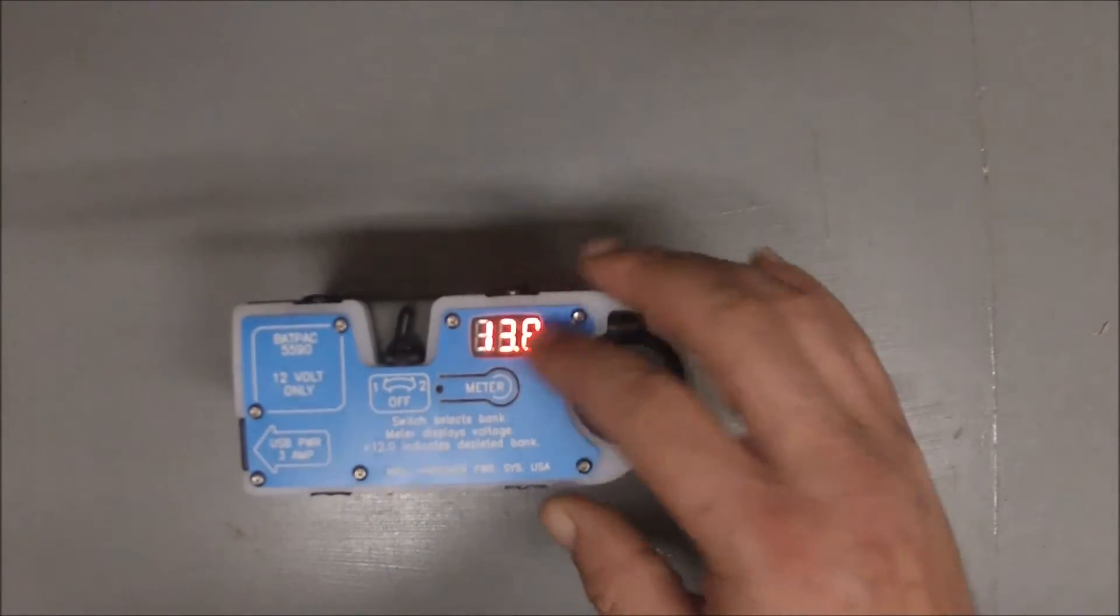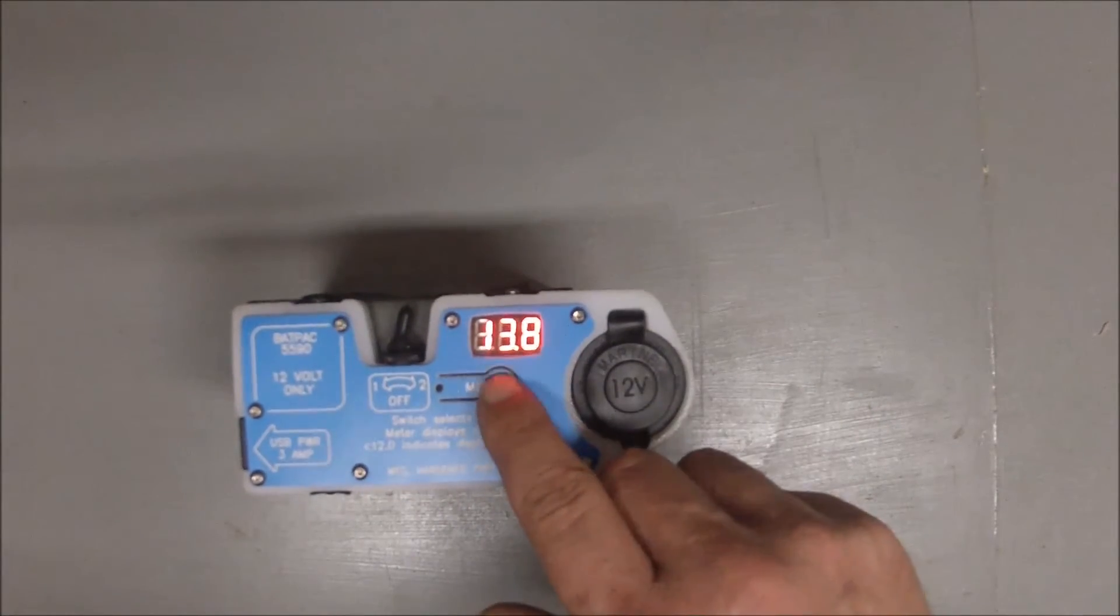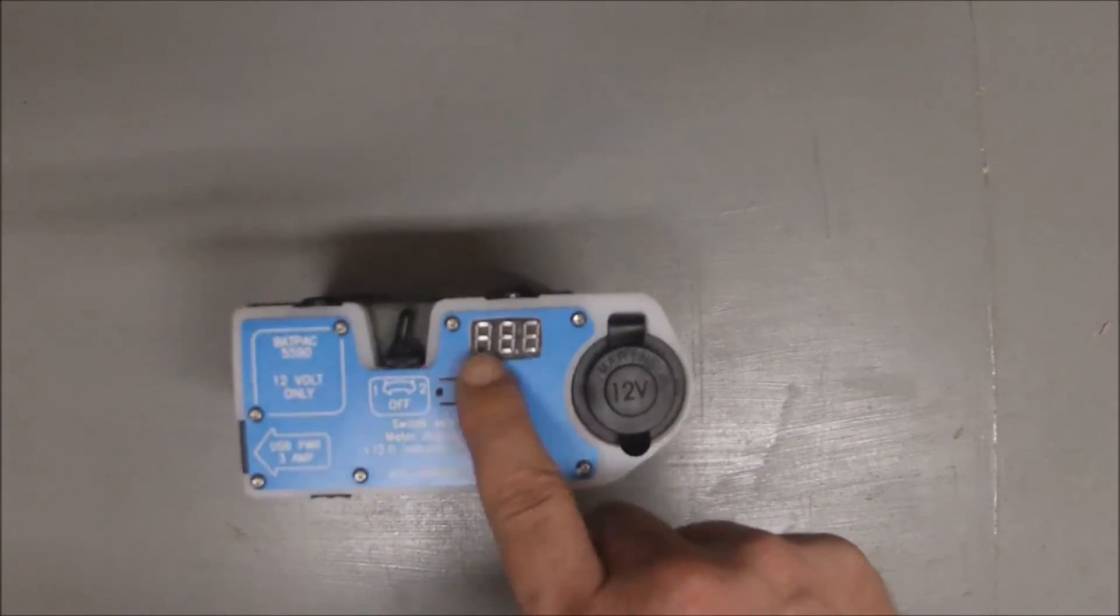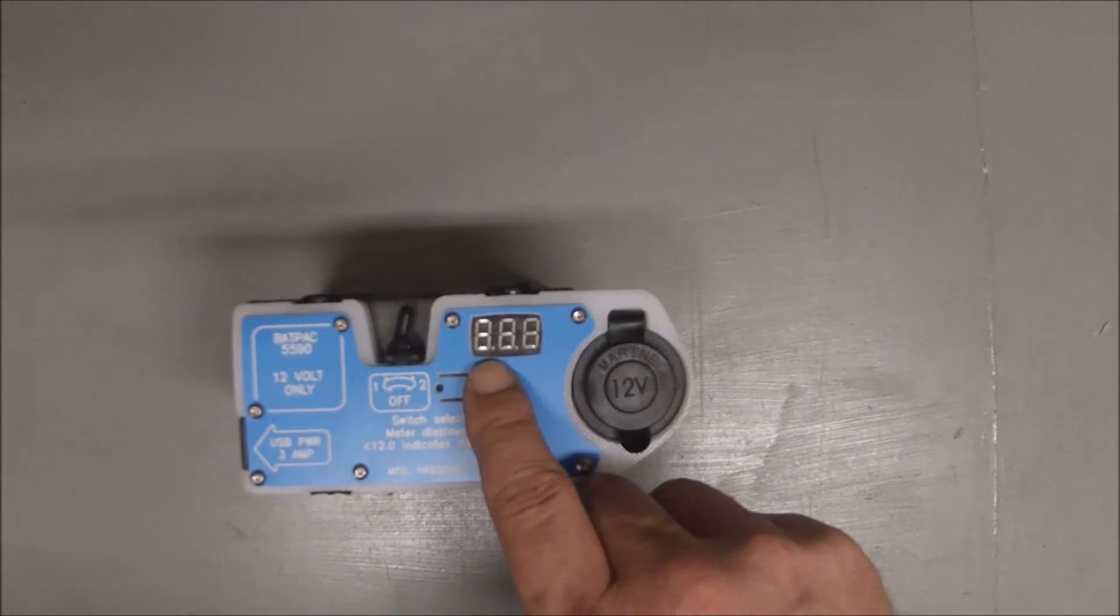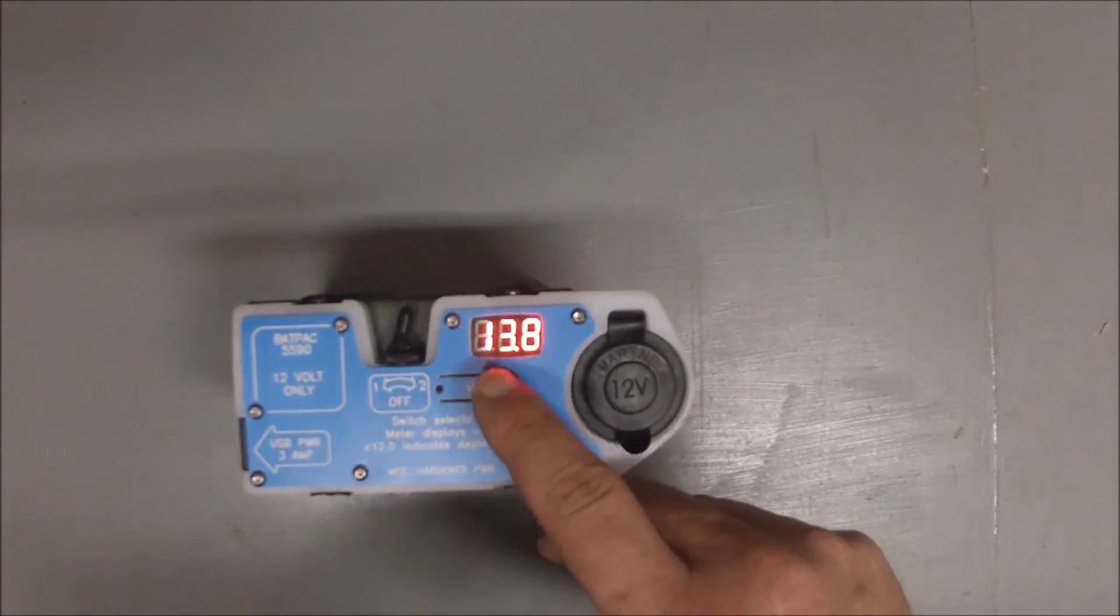Now obviously this has a meter incorporated and especially since it's military and there are light signature issues, this latching push button toggles on and off the voltmeter without affecting performance.